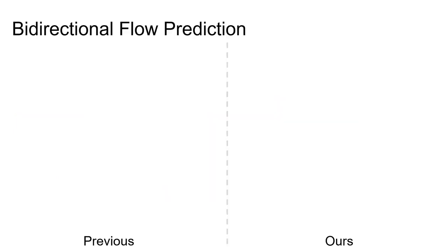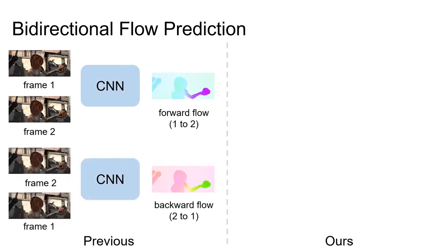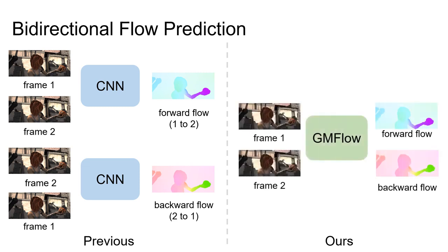Another benefit of our framework is that it simplifies bidirectional flow prediction. To compute forward and backward flow, previous methods typically require forwarding the network twice with the input image order exchanged, while our GMFlow framework only needs to transpose the global correlation matrix. Thus, our framework is also more efficient.